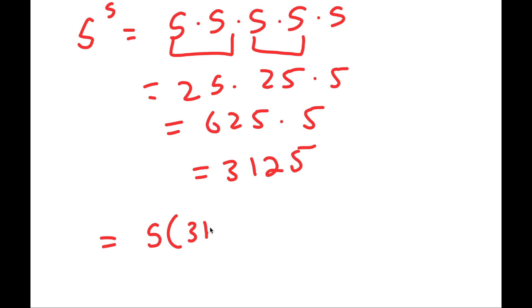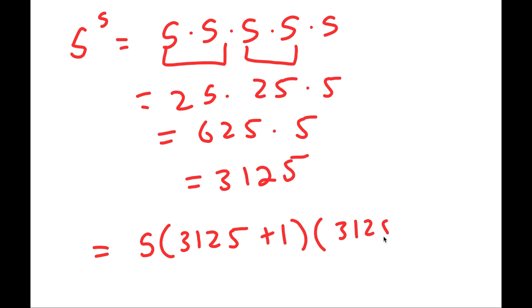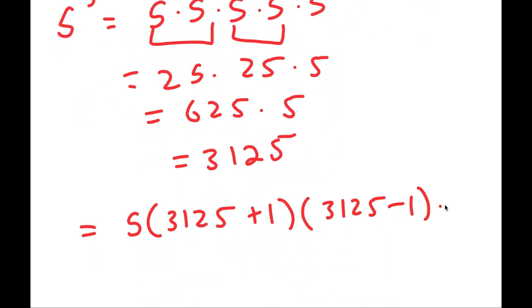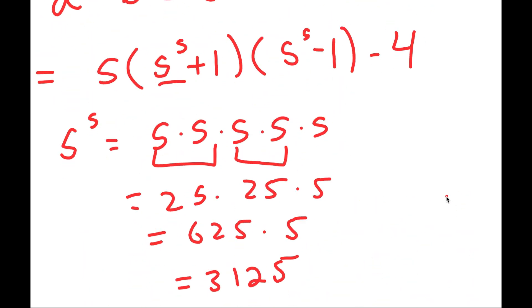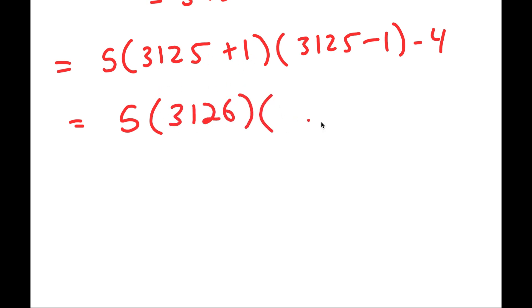So I get 5 times (3,125 plus 1) times (3,125 minus 1), minus 4. That gives 5 times 3,126 times 3,124, minus 4.